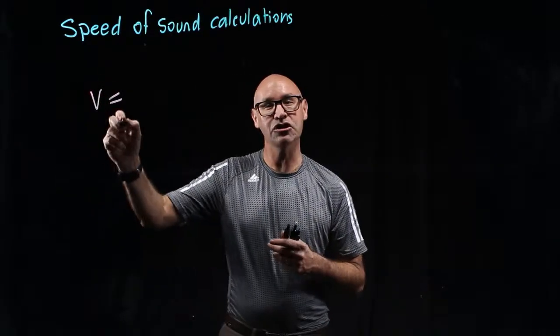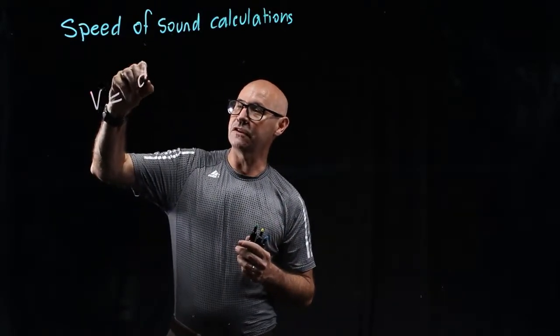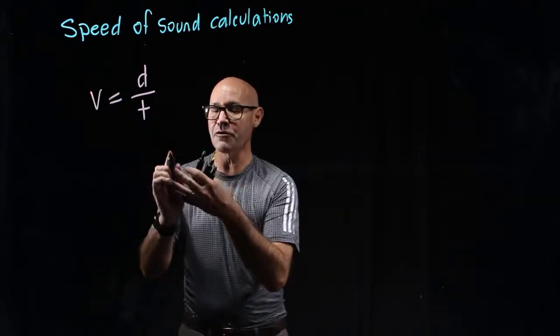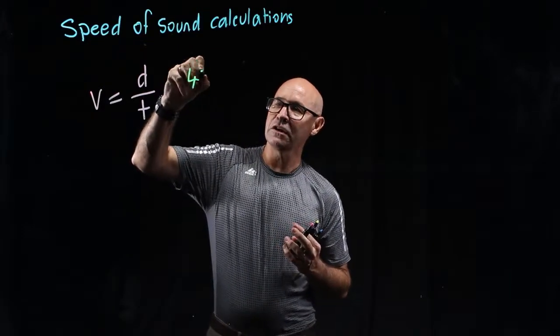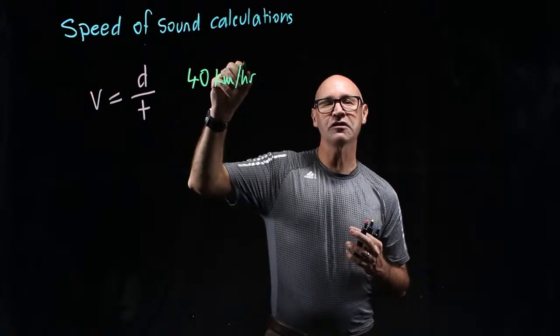So speed, we actually use the symbol V. Speed is distance divided by time. The way I remember this, think about the speed limit outside the school, 40 kilometres per hour. So what does per mean?